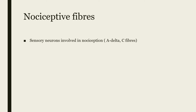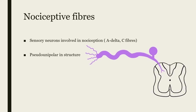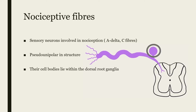First-order sensory neurons involved in nociception are A-delta and C fibers. They are both pseudo-unipolar in structure, and their cell bodies lie within the dorsal root ganglia, seen here. They synapse with second-order neurons in the dorsal horn of the spinal cord, as seen here.